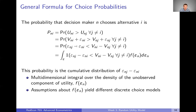Let's rearrange this a little bit. We put all of the epsilons on the left-hand side and the V's — the representative utilities — on the right-hand side. So now we're saying we have the probability that this difference in epsilons is less than the difference in representative utility.